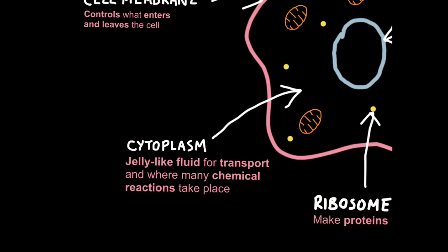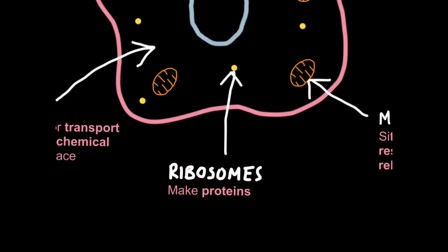The cytoplasm, which like the cell membrane you'll find in every type of cell, is a jelly-like fluid for transport, and it's where many chemical reactions take place. For example, glycolysis, which is a really important part of respiration. Ribosomes are these tiny yellow circles I've drawn here. You will find these in all cells as well. Their function is to make proteins. I go into a lot more detail about their function in the tutorial on protein synthesis.